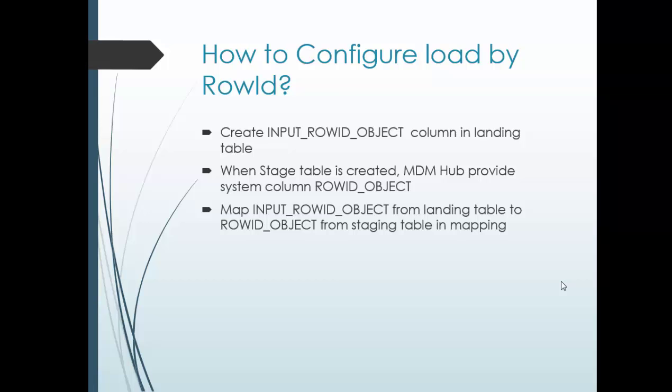First, we create a custom or business column in the landing table. For example, the column name could be 'input_row_id_object'. Once you create that column in the landing table, the next step is mapping it to the row ID object in the staging table. We map the input row ID object from the landing table to the row ID object of the staging table. That is the only configuration required for achieving this functionality.